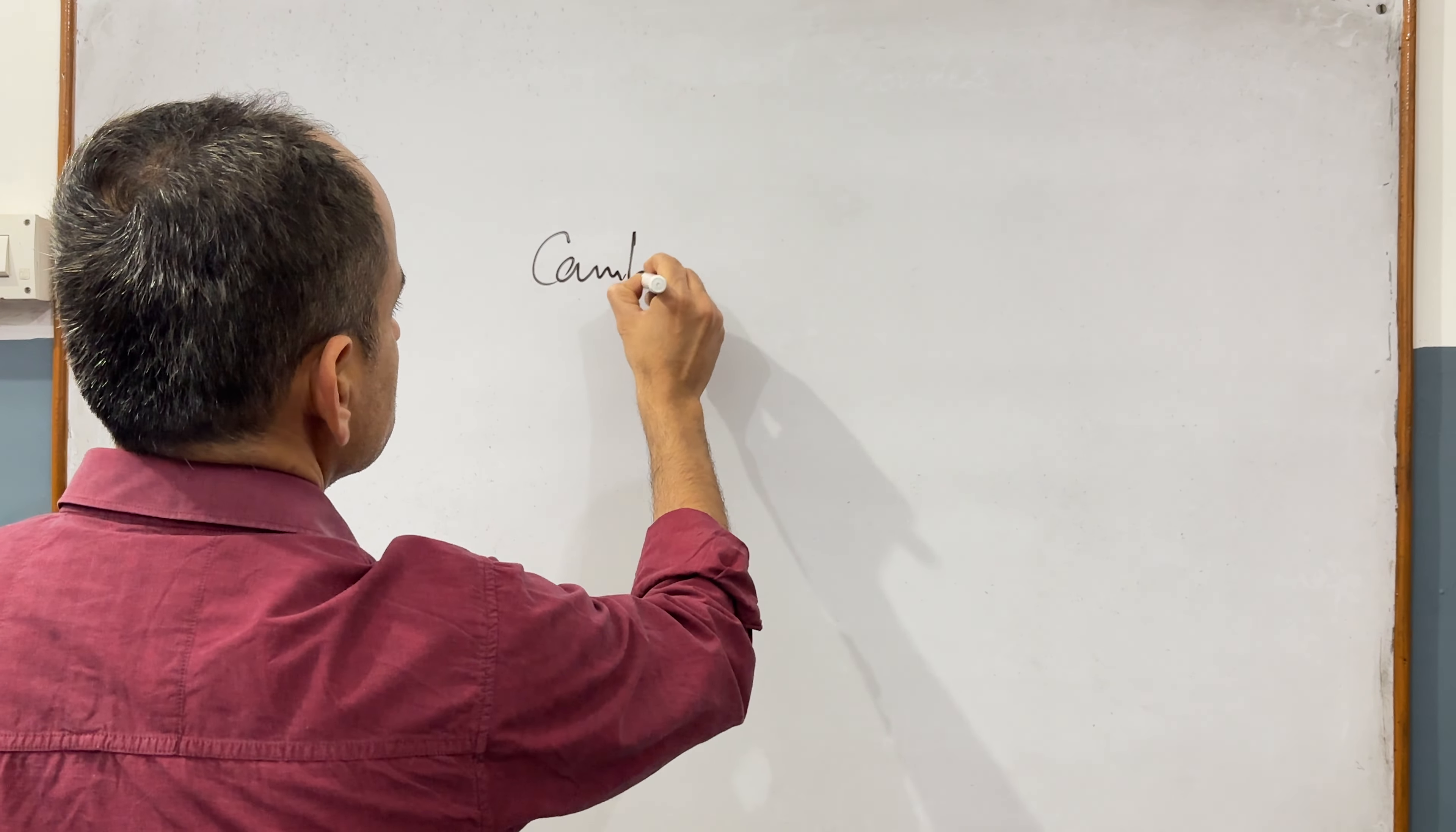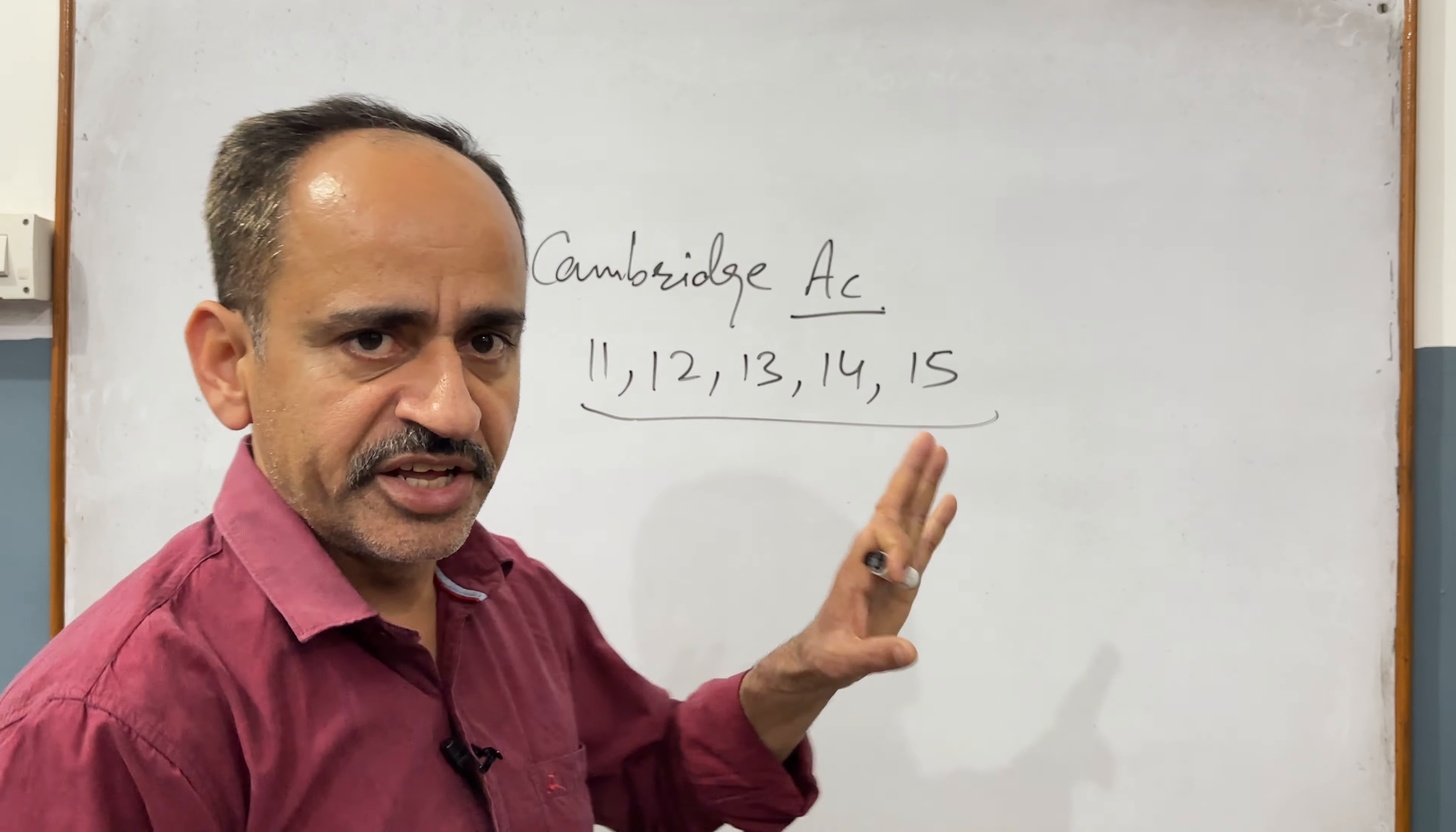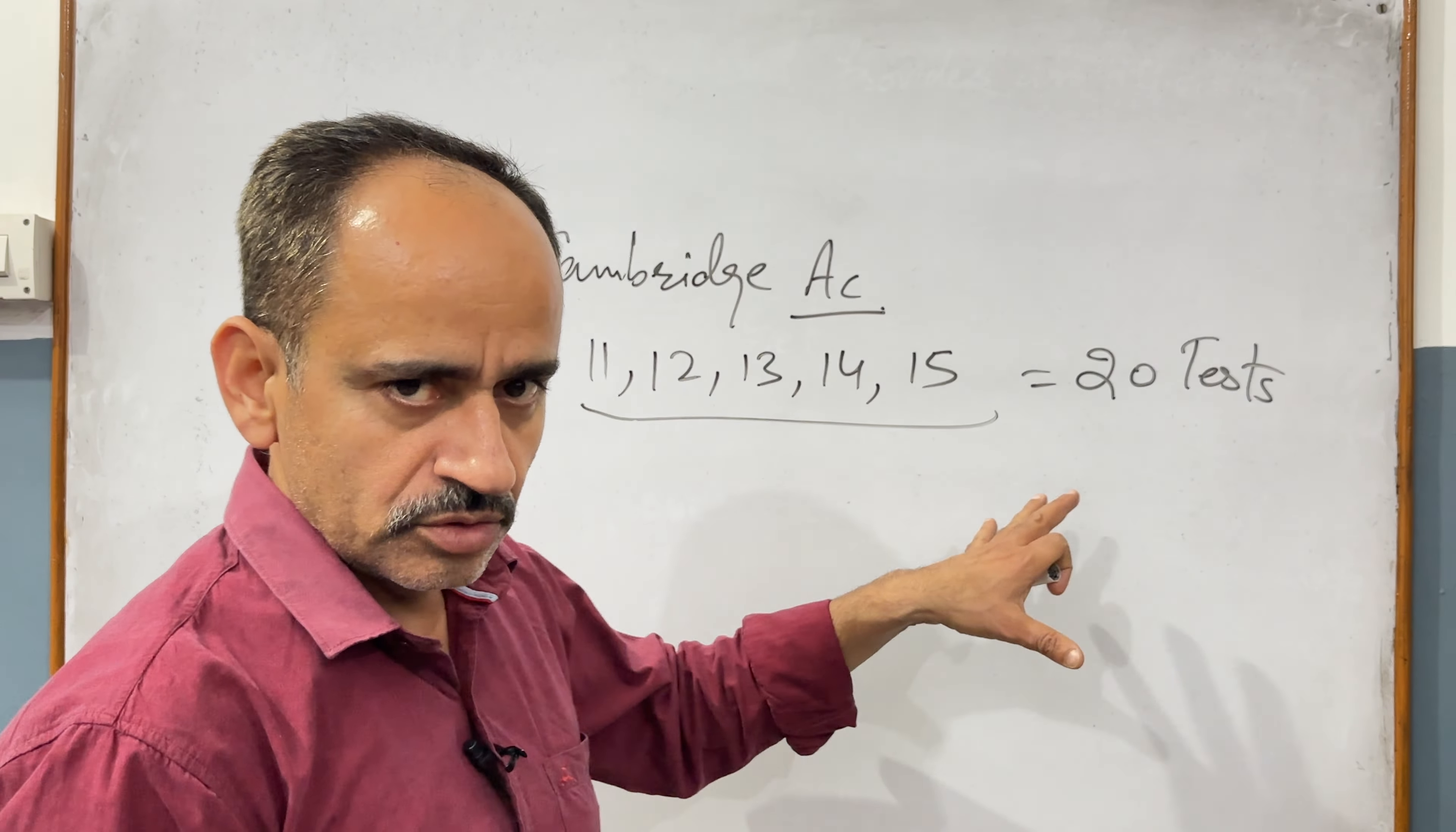First of all, you need to buy some Cambridge books. You should buy Cambridge 11, 12, 13, 14, 15 - these five books are enough for your IELTS practice. Each book contains four tests, so in total you have twenty tests. The cost of each book will be around 250 or 300 rupees. You can get the PDFs of these books and have photocopies made, which would be cost effective.